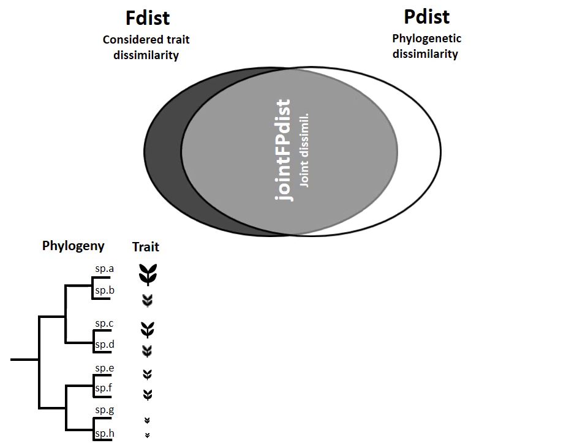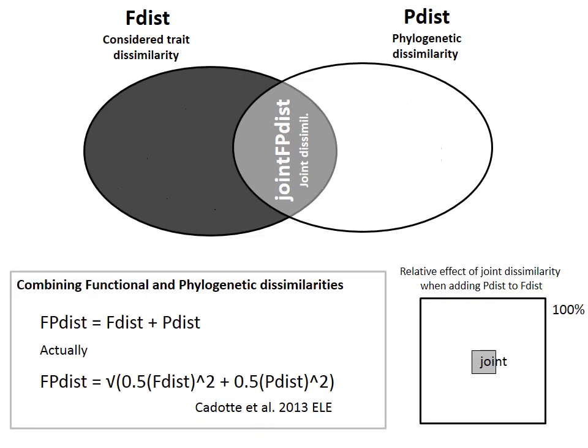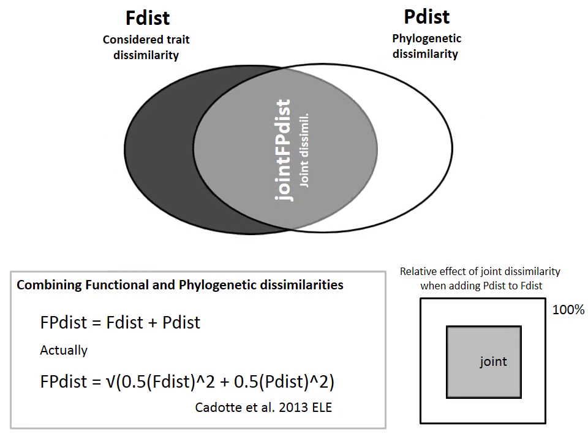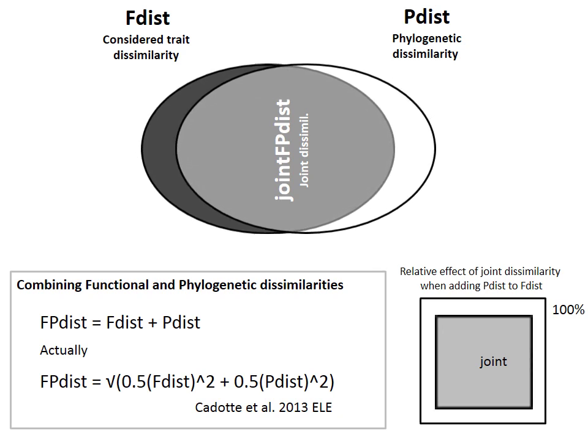We call this overlap joint dissimilarity. Now, why is such dissimilarity important? Recently, it has been proposed that functional and phylogenetic dissimilarity can be combined together so that phylogenetic information provides a complement to trait information. This could be particularly important to account for potentially unmeasured traits, provided they have a high phylogenetic signal. This combination is generally resolved by doing a weighted sum of trait and phylogenetic dissimilarities. Clearly, the greater the overlap between traits and phylogeny — when there is high phylogenetic signal — the more important the effect of joint dissimilarity on the combination.